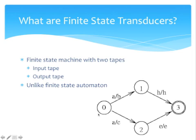So here we have an example on the right. We go from state 0: on the input tape we read A, and on the output tape we write B. Then we go to state 1, which goes to state 3, the final state, where we read in H and output H on the output tape. Same thing down here: reads A, outputs C, reads E, outputs E, and goes to the final state.